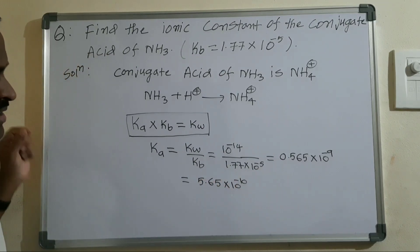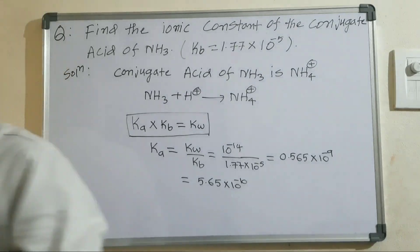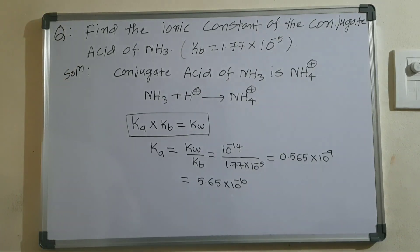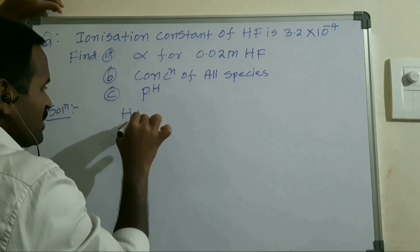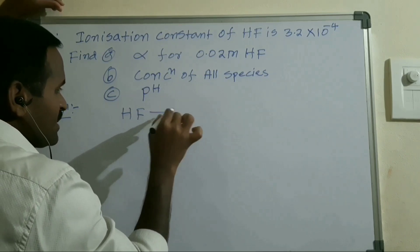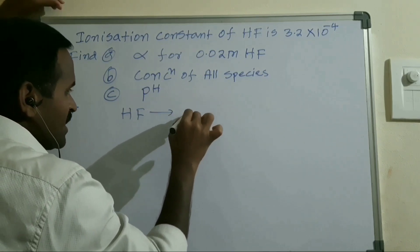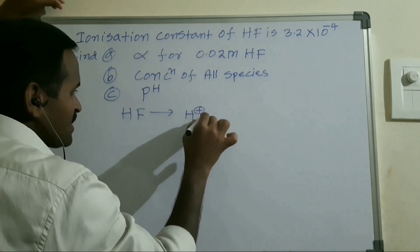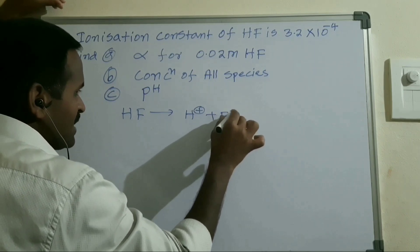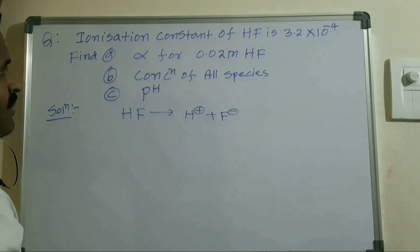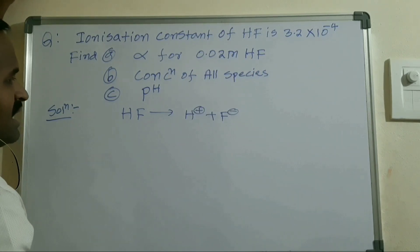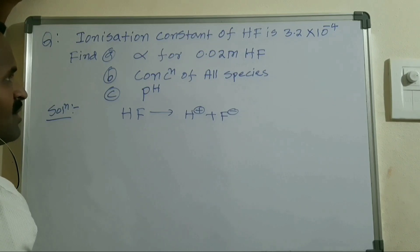Now for HF dissociation: HF dissociates into H⁺ and F⁻ ions. The ionization constant Ka for HF is given as 3.2 × 10⁻⁴.